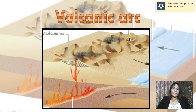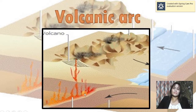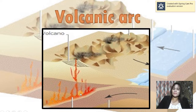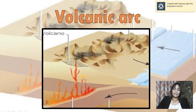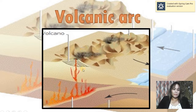We also have the volcanic arc. After the subduction process, those volatile materials that go to the mantle will be melted. Because of the convection current happening in the mantle, the melted material goes upward and forms a volcanic arc. Every time there's a boundary between oceanic and continental plates, there's always a volcano.